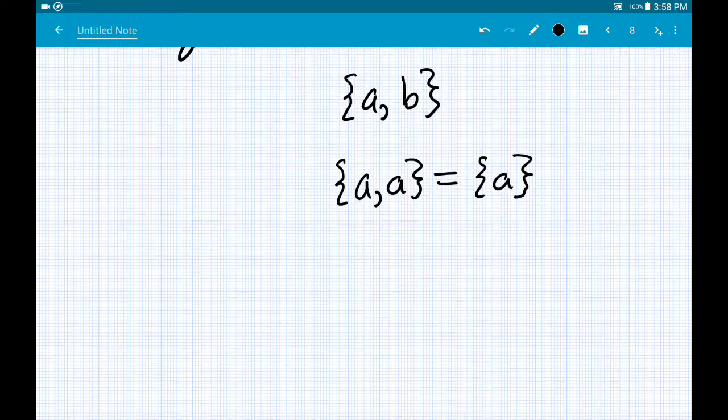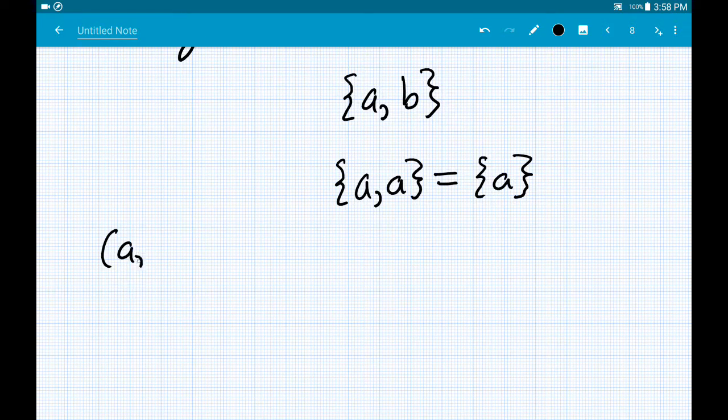One other thing that we get is the ability to construct ordered pairs. So we want to be able to say what this ordered pair (A, B) is in terms of the language of sets, which do not have order built into them.